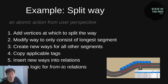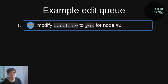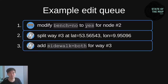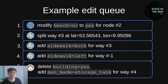An example edit queue might look like this: we change a tag for a node, or split a way at a certain position. Maybe after that we add another tag for one of the newly created ways. And of course, one action can also change several tags. For example, the user was asked what kind of building this is, and the answer was 'storage tank' — so several tags need to be changed.